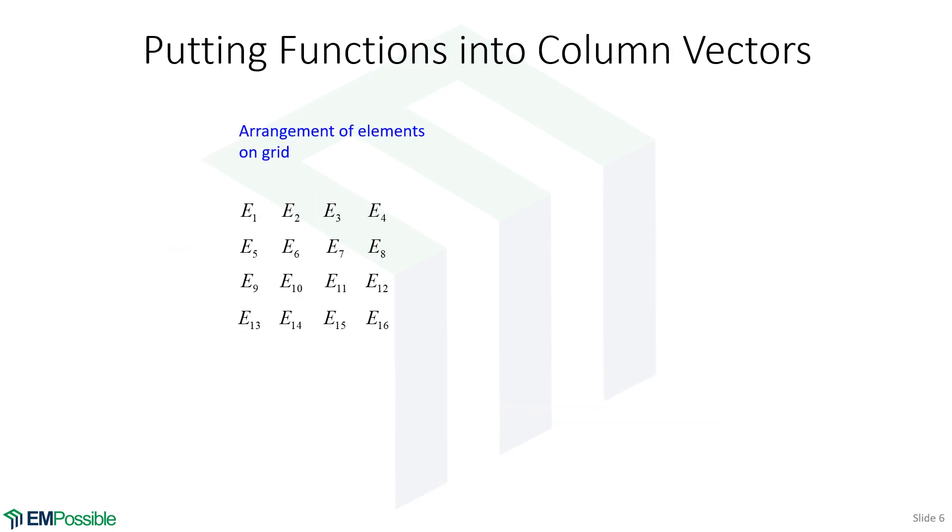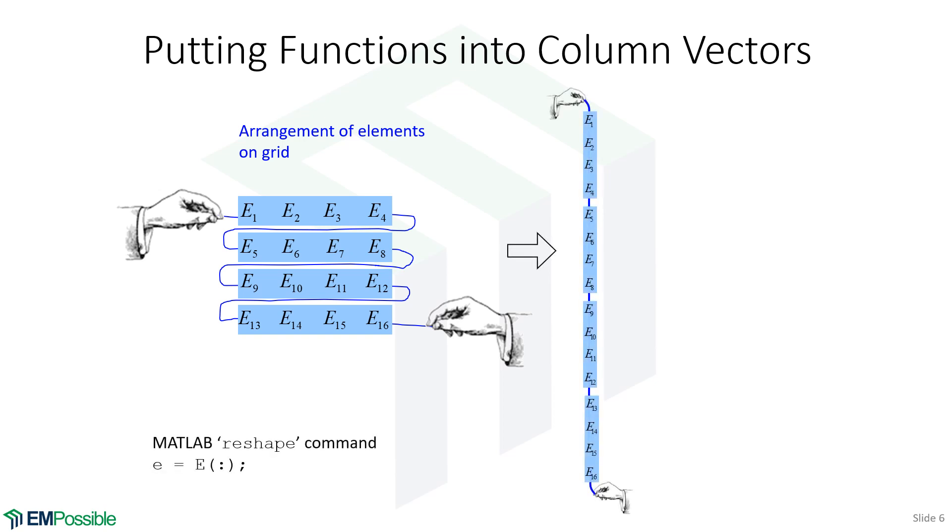Here's a way to visualize this. We start off with our two-dimensional array of numbers. Imagine we connect these with little bars, and then we run a string through all of these. Then imagine we pull tight that string. We have a column vector. And in MATLAB, we can do this with one real simple command. If capital E is our two-dimensional array, inside parentheses we have a single semicolon, and that is telling MATLAB to reshape this to a column vector, and I'm calling that little e.